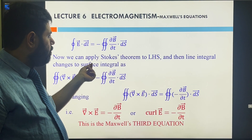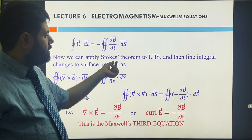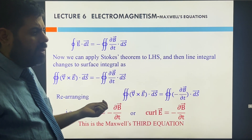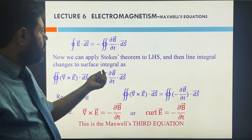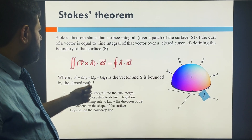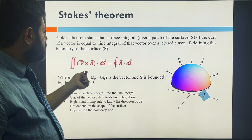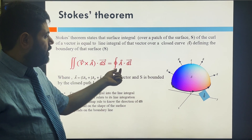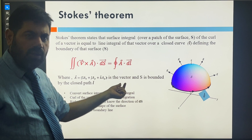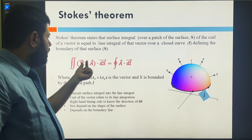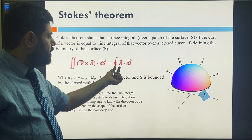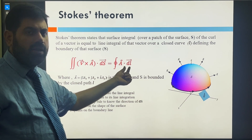We can solve this problem with the help of the Stokes theorem. The Stokes theorem tells us that if a line integral is given for some function, you can convert this line integral into a surface integral by writing it as the curl of A. The function A·dl is the line integral, and the same function can be written as curl of A in the surface integral form.